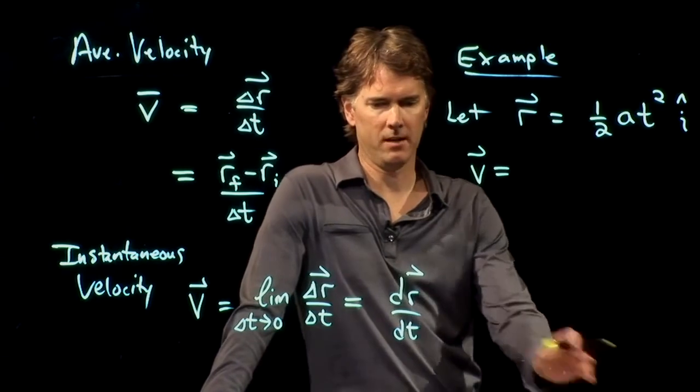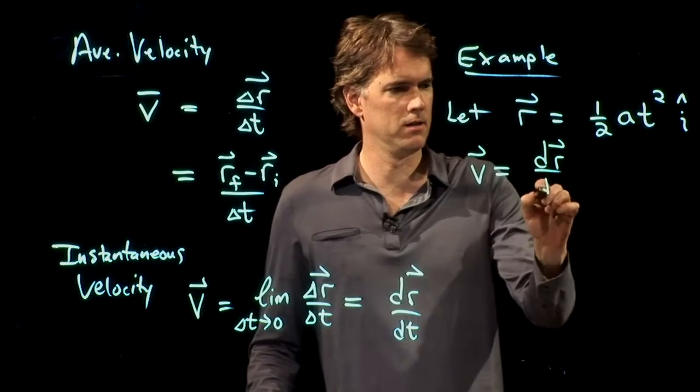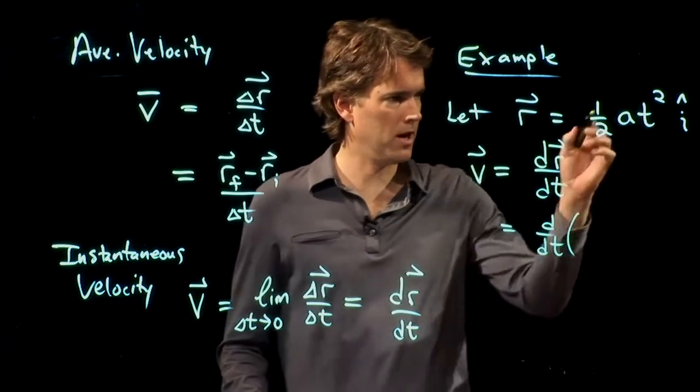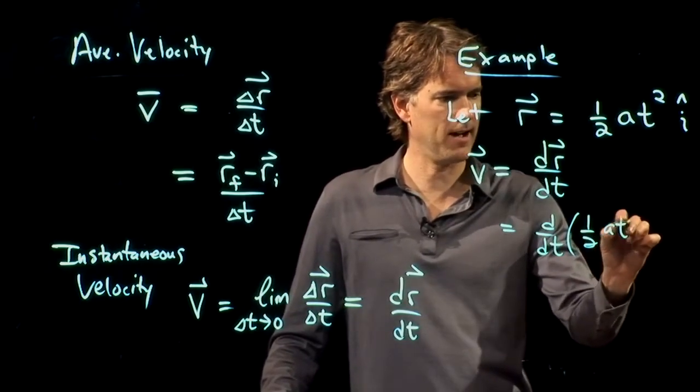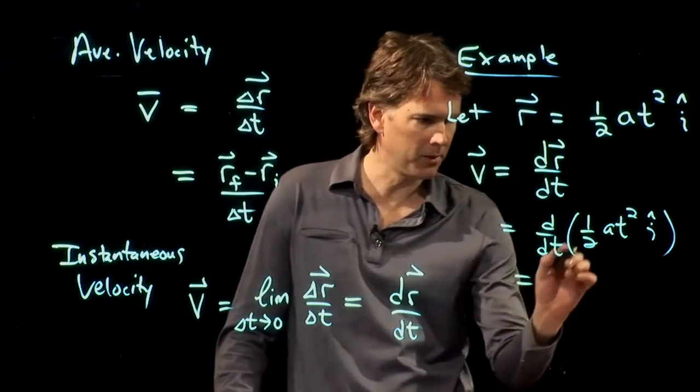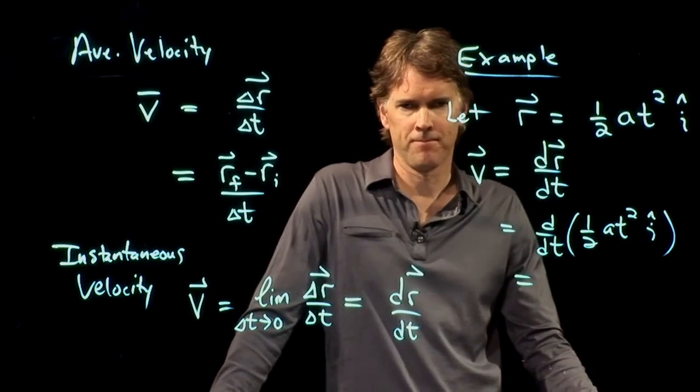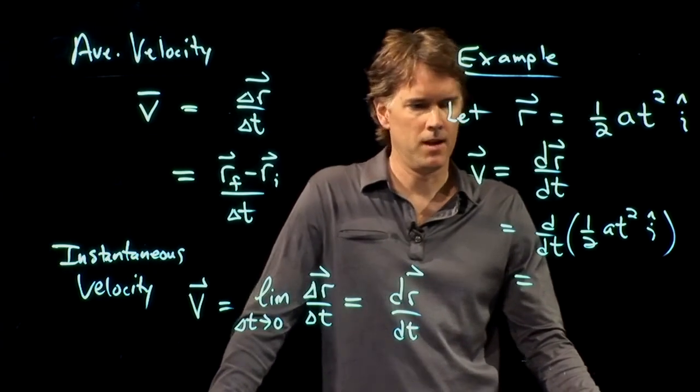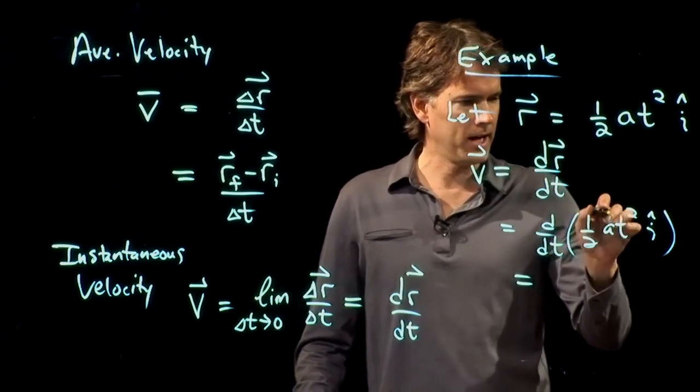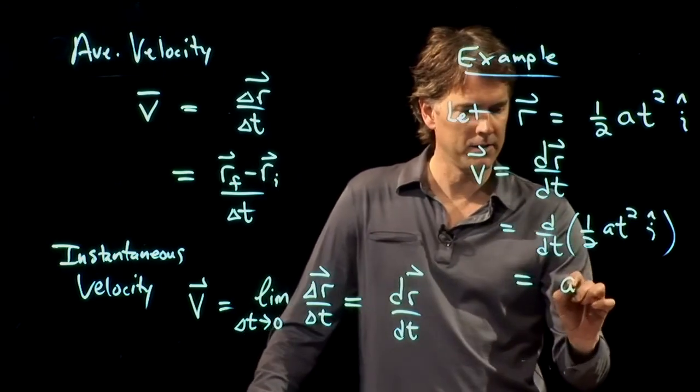Well, we just have to take a derivative. So, V is going to be dR dt, which is d dt, the derivative of one-half At squared, I hat. Now, what is the derivative of one-half At squared? Somebody raise your hand. Yeah. At, right? I pull down the exponent, that two cancels with the half, I go At to the two minus one, which is just At, and so I just get that.